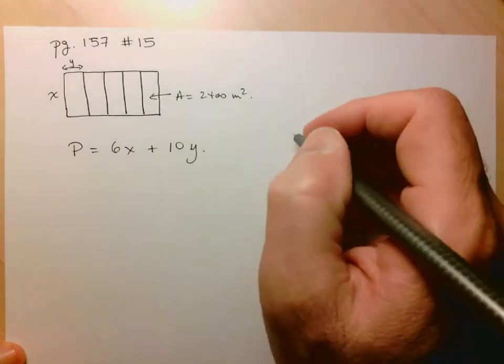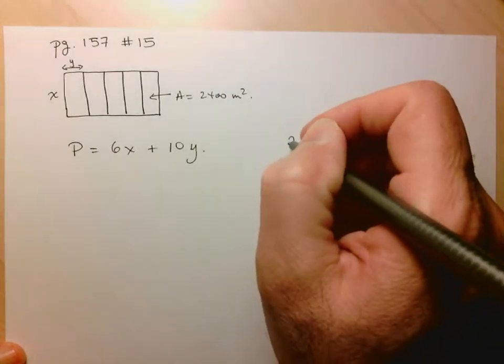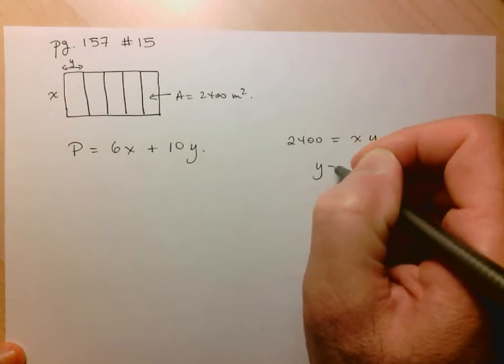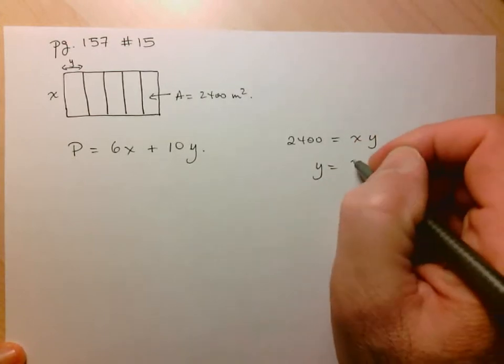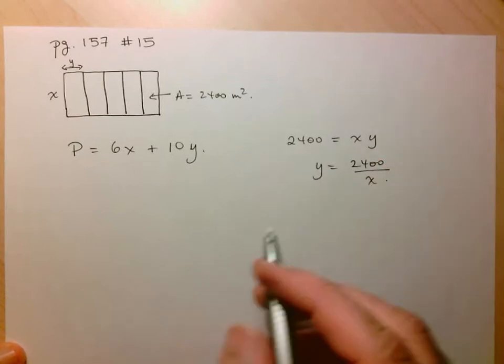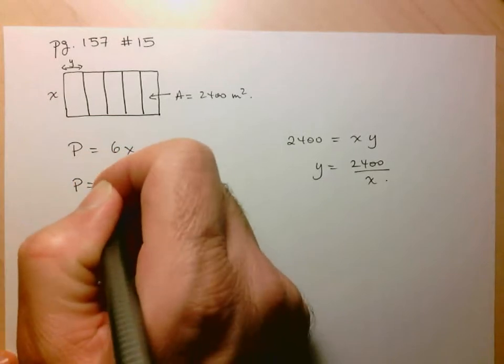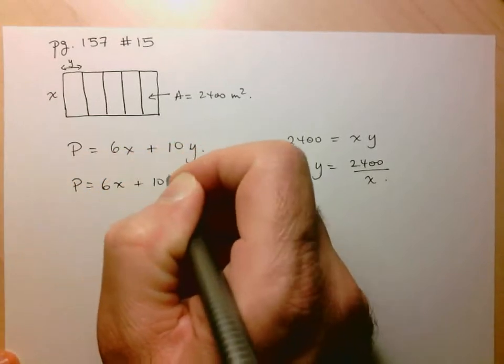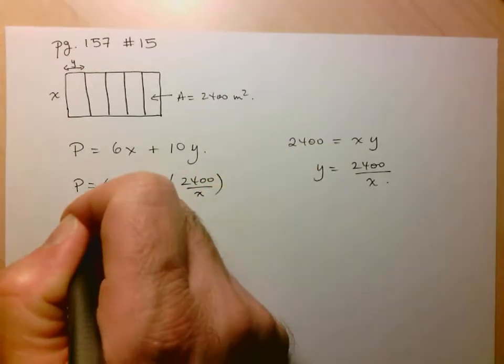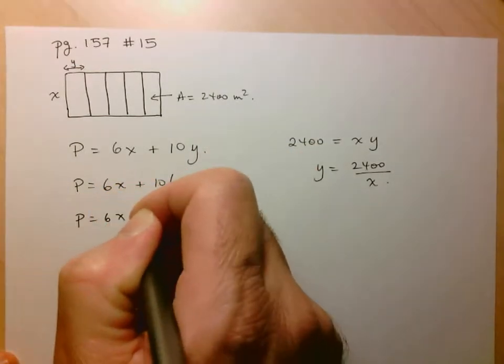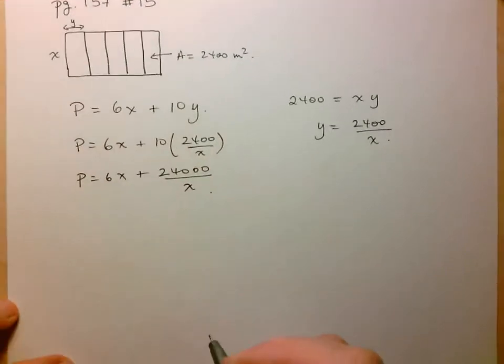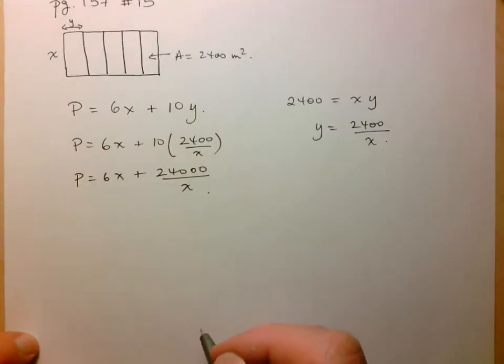So what would the perimeter be here? Well, how many Xs do I have? One, two, three, four, five, six. So I have six X values, and here I've got one, two, three, four, five, and another five here, plus 10 Y lengths, so 10 Y. So this is my perimeter function, and as is often the case, we've got two variables here. So we're going to have to write one in terms of the other, and we'll use the constraint for that. So the relationship between X and Y will be in terms of the area.